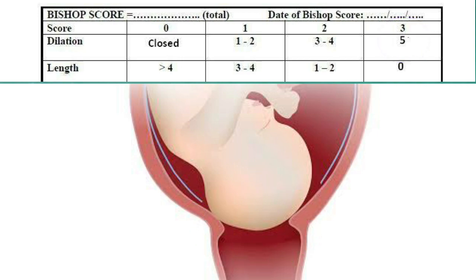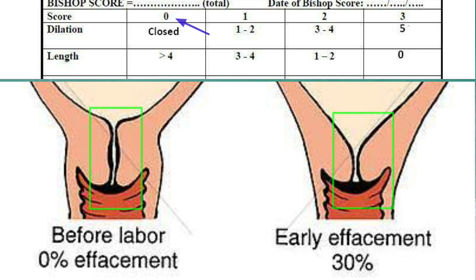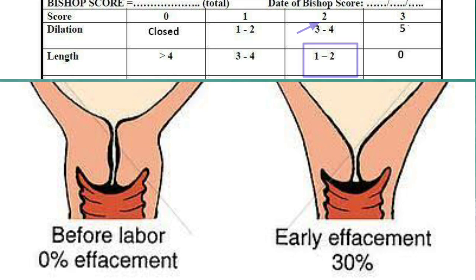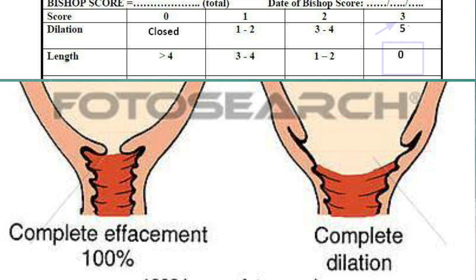The second parameter is cervical assessment. In the modified Bishop Score, it is measured as cervical length. If the cervical length is more than four centimeters, the score is zero. If two to four centimeters, the score is one. If one to two centimeters, the score is two. If less than one centimeter, the score is three. Effacement refers to the shortening and thinning of the cervix.